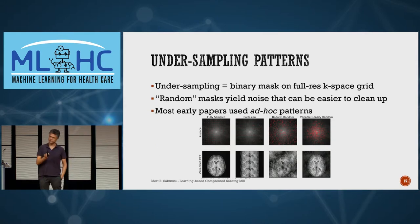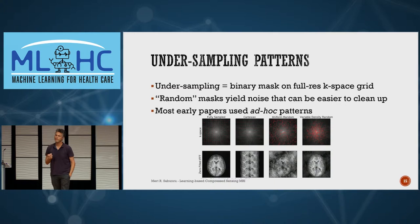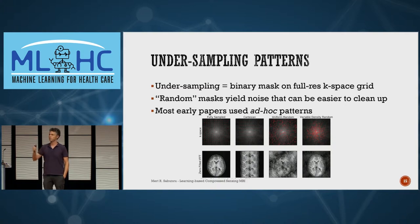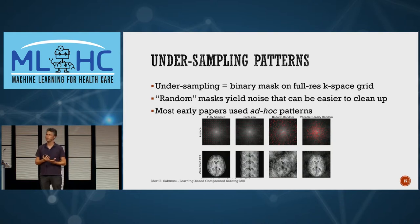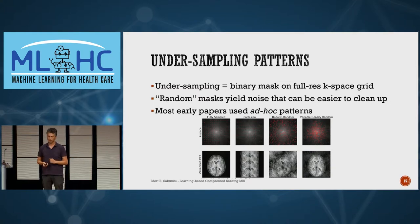The second big problem of compressed sensing is: where do we undersample? What is the undersampling pattern? You could undersample on a Cartesian grid, uniformly, or use a Gaussian distribution to concentrate on low-frequency coefficients. But what's the best undersampling strategy was really not a focus of the literature until very recently — not because people didn't think about it, but because it's a very challenging problem.